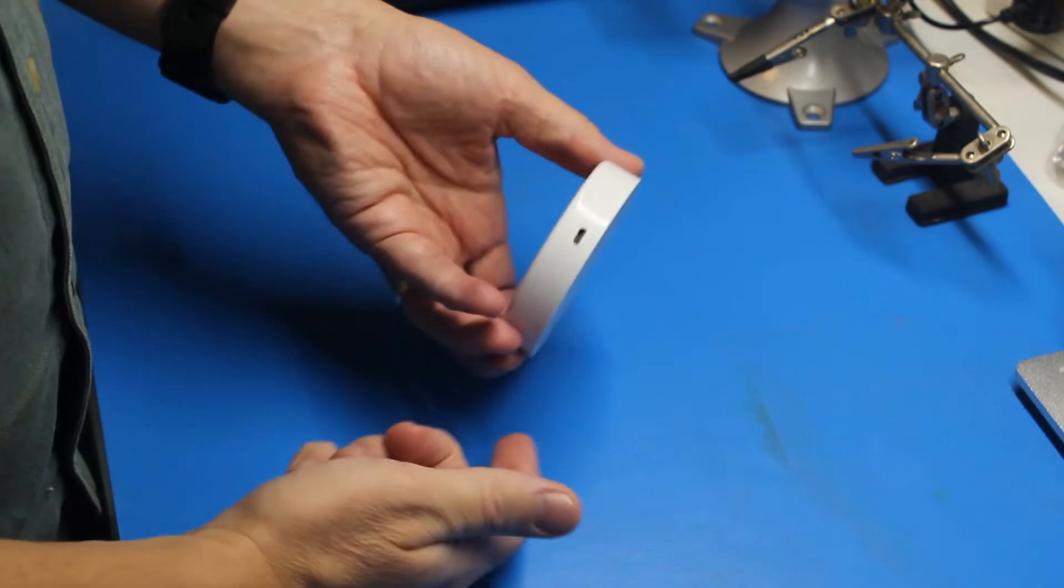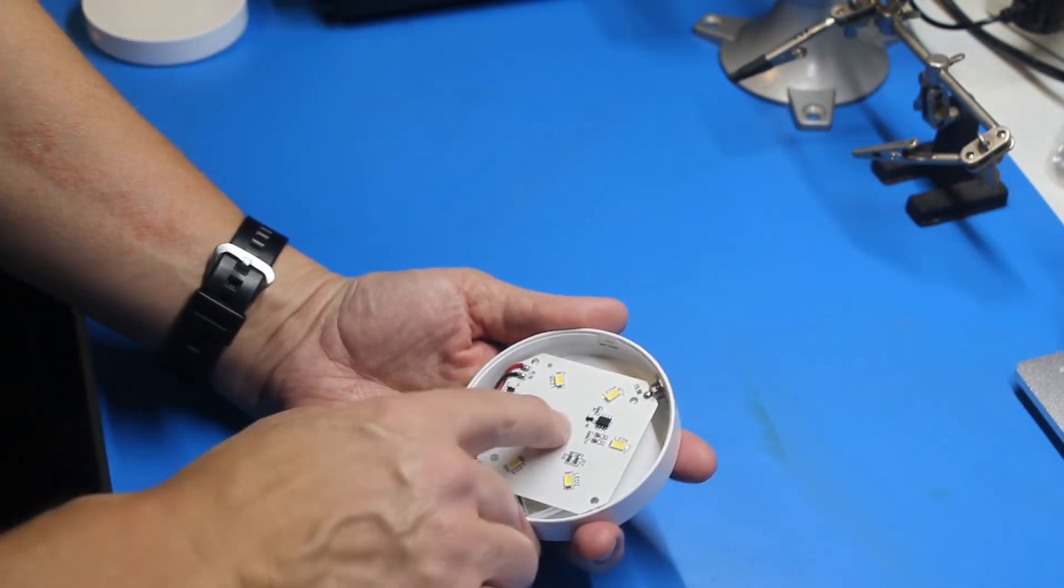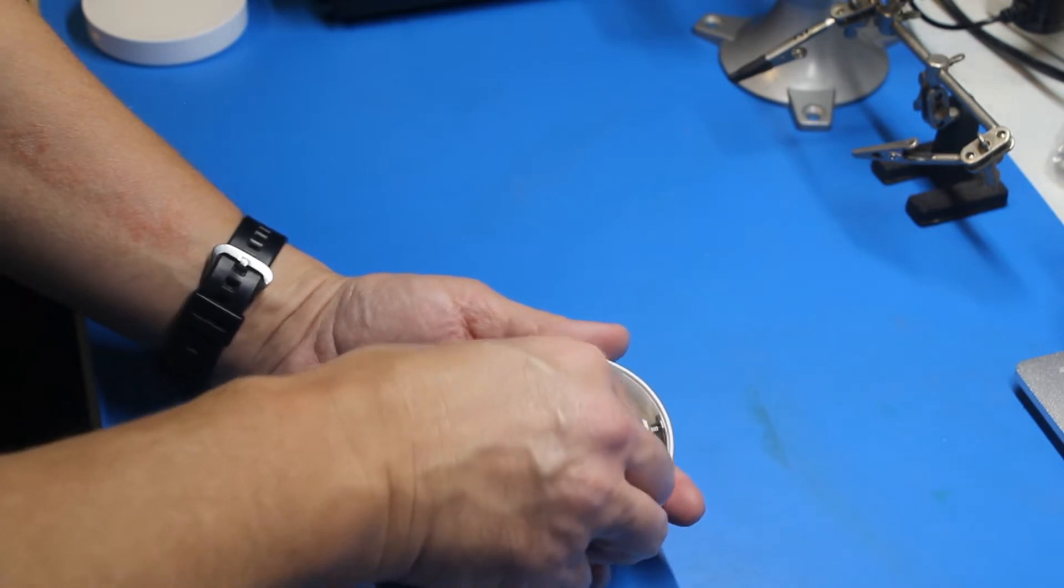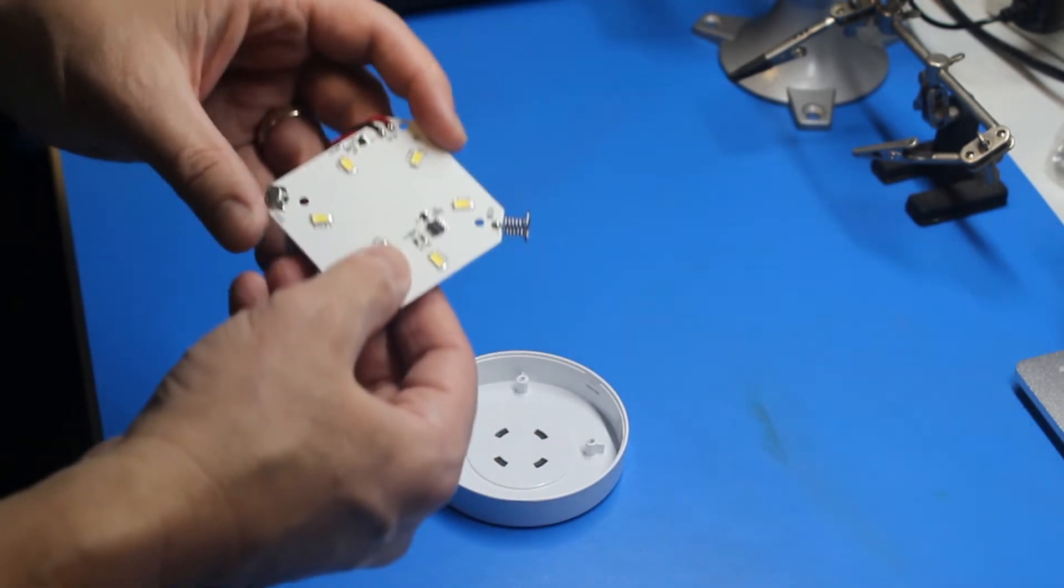The next step was to figure out how they worked internally and what it would take to modify them. I took apart one light and inspected the circuitry. The first surprise was the capacitive touch sensor used to both turn on the light and control the dimming feature.